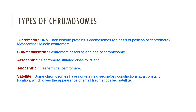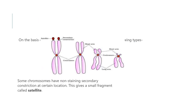Some chromosomes have a non-staining secondary constriction at a constant location, in addition to the primary constriction at the centromere. This secondary constriction gives the appearance of a small fragment, and that small fragment is called a satellite. You can see the satellite in the next slide, where the secondary constriction is shown. The four types are: metacentric, submetacentric, acrocentric, and telocentric.